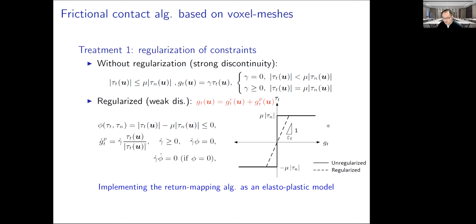To simplify our problem, we adopt several assumptions. First, we regularize the tangential constraints. Without regularization, the relationship between G_t and tau_t is a strong discontinuity at G_t equals zero. Therefore, during the iterative process, we will confront the convergence issue when G_t changes its sign.